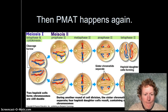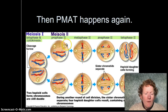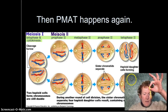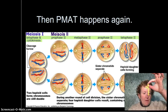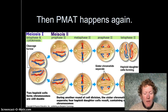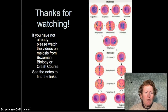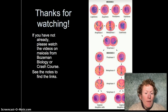After the first PMAT in meiosis one, there's a second round — PMAT two: prophase, metaphase, anaphase, and telophase two — and you end up with single copies of each chromosome in the resulting haploid cells. If you have a single copy, you're haploid, because normally your cells have two copies of each chromosome. If you haven't already, please watch the videos on meiosis from Bozeman Biology or Crash Course.